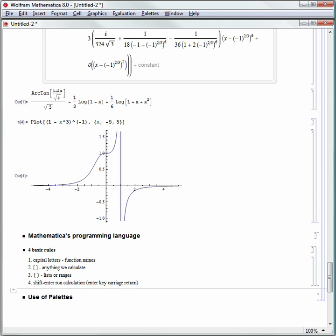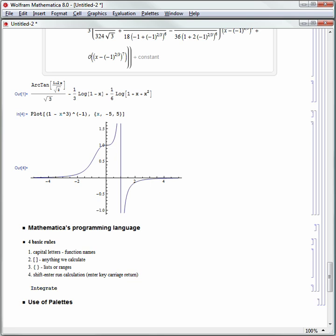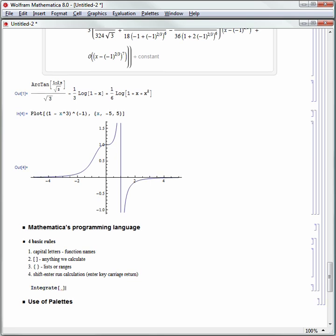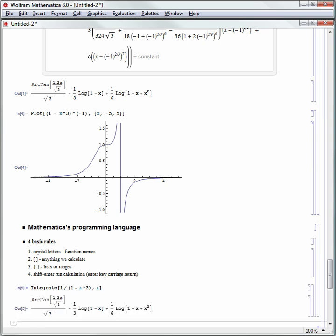Let's do those two calculations above using the Mathematica programming language instead of the free form linguistic input. The first one is integrate. The function in Mathematica is integrate with capital I. We use the capital letter in the function name, square brackets around what it is we want to calculate. We're going to integrate 1 over 1 minus x cubed, the quantity, and we need to say that with respect to x. Then we hit Shift-Enter or Enter on the numeric keypad and that will run that integration.